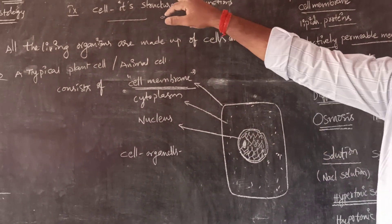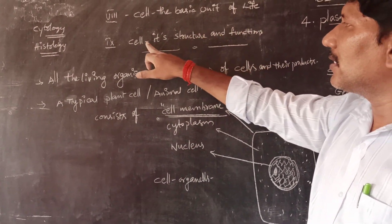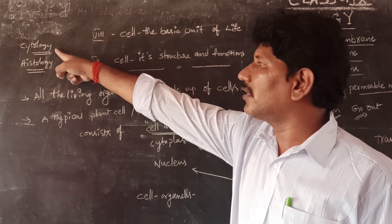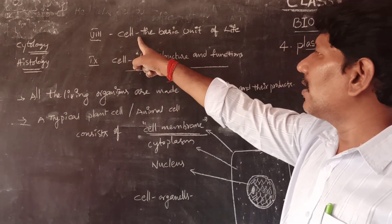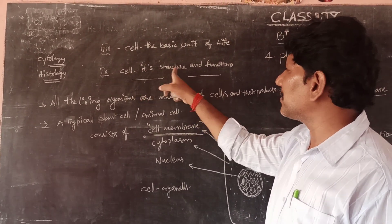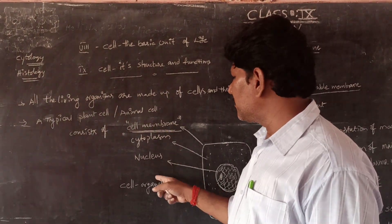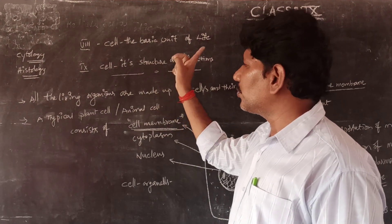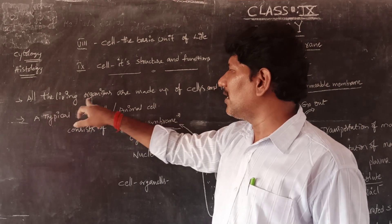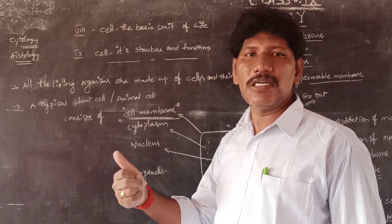We already studied in 8th class that cell is the basic unit of life. Coming to the explanation part of this chapter, cytology means the study of the cell — or cell biology. At the next level, 9th class 1st chapter covers cell, its structure and functions. Cell is the basic unit of life because all living organisms are made up of cells and their products like tissues, organs and organ systems.